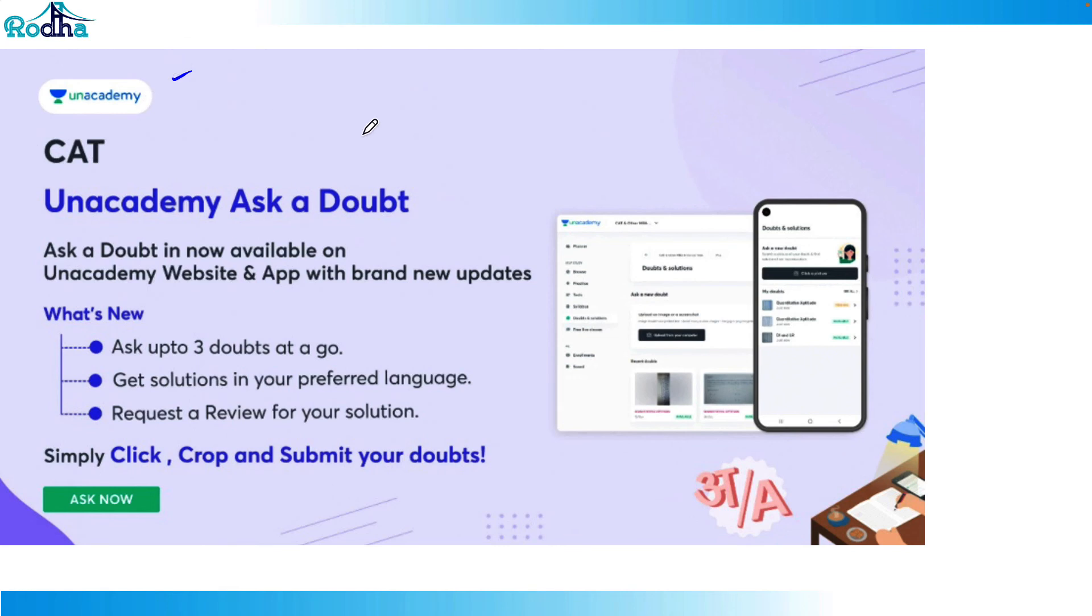Let me tell you about Ask a Doubt feature. This is absolutely free for everyone. You can download the Unacademy app. It's available on the website and app. You can crop any picture, crop the question part and submit, and within four to six hours you get solutions mostly in video form. You can ask up to three doubts at a go till it is clear.